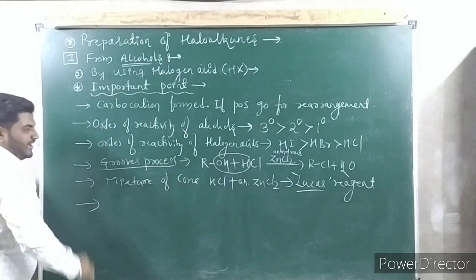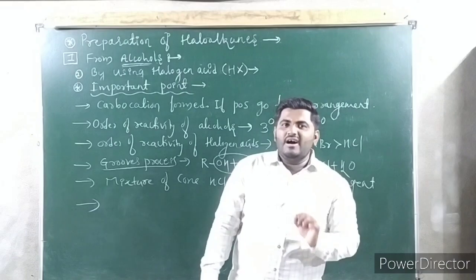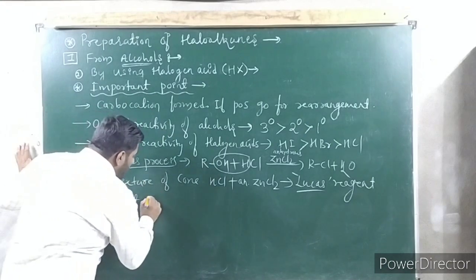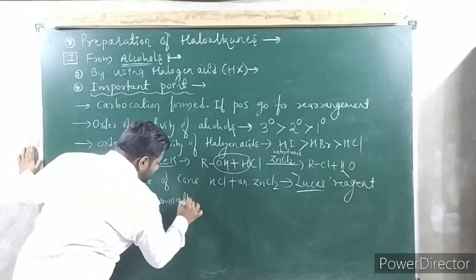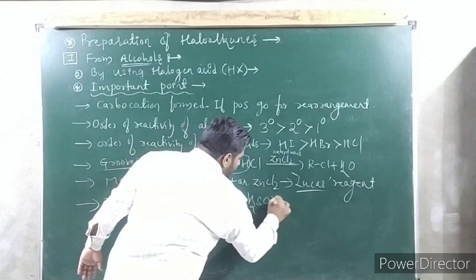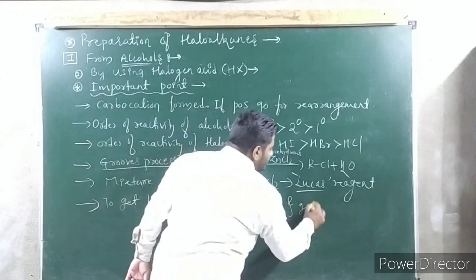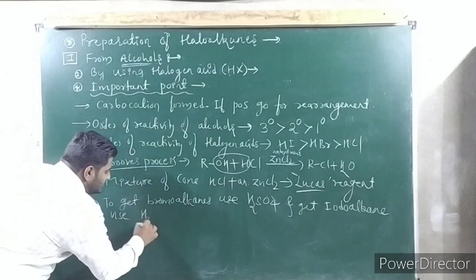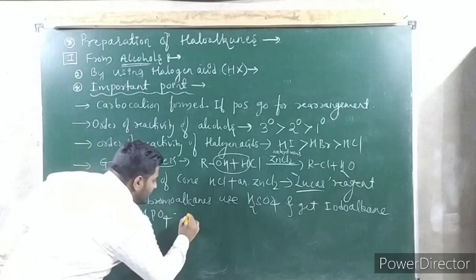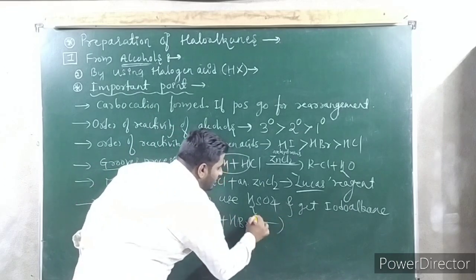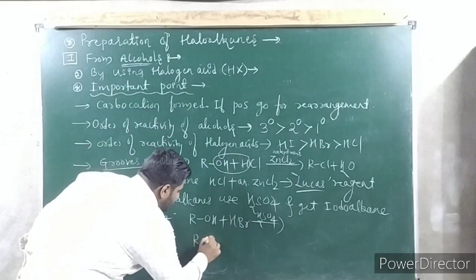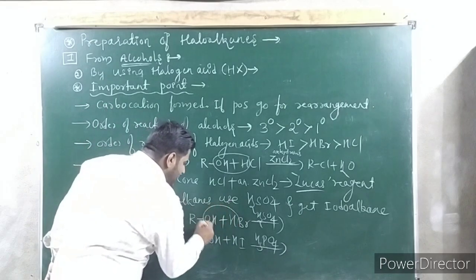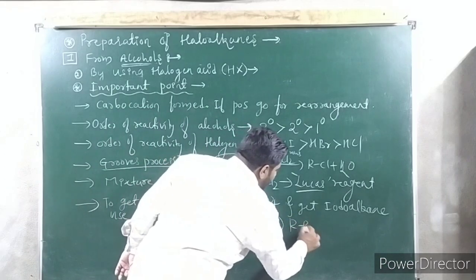As of now, remember: Lucas reagent is a mixture of concentrated HCl and anhydrous zinc chloride. Very important point: if you want bromoalkanes (RBr), better use H₂SO₄ along with HBr. And to get iodoalkanes (RI), use H₃PO₄ (phosphoric acid) instead of H₂SO₄. Why? Because HI is a reducing acid and H₂SO₄ is an oxidizing acid — H₂SO₄ may oxidize the HI. So you use H₃PO₄ when taking HI to get high yield.